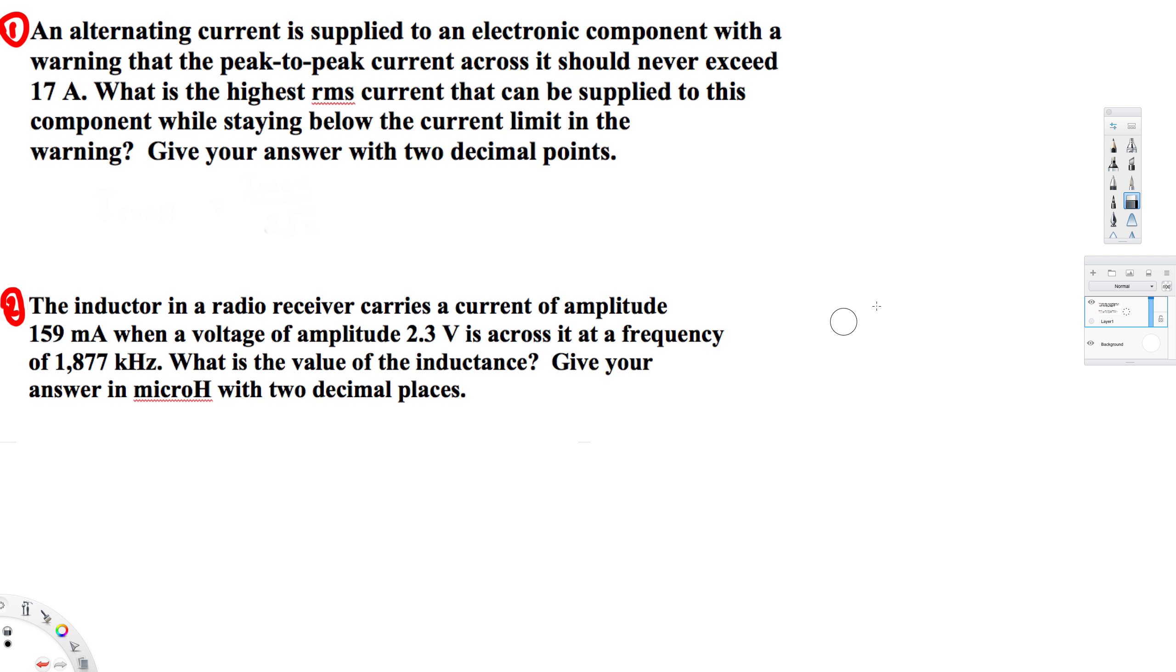Okay, here the question is asking us to find out the highest RMS current. Let's say I_rms that can be found by dividing I_max by 2 root 2. Here we have the maximum current that can have is 17 ampere, so that is 17 ampere divided by 2 root 2. And if you divide this one by 2 root 2, that's going to give you 6.01 ampere. That's going to be the I_rms.